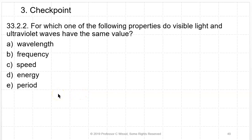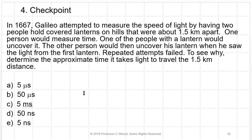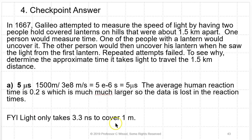For which property do visible light and ultraviolet waves have the same value? Speed — all electromagnetic waves have speed C in vacuum. In 1667, Galileo attempted to measure the speed of light by having two people hold covered lanterns on hills about 1.5 km apart. Repeated attempts failed because the travel time is only 5 microseconds, far smaller than the average human reaction time of 0.2 seconds — the data was lost in the reaction time.